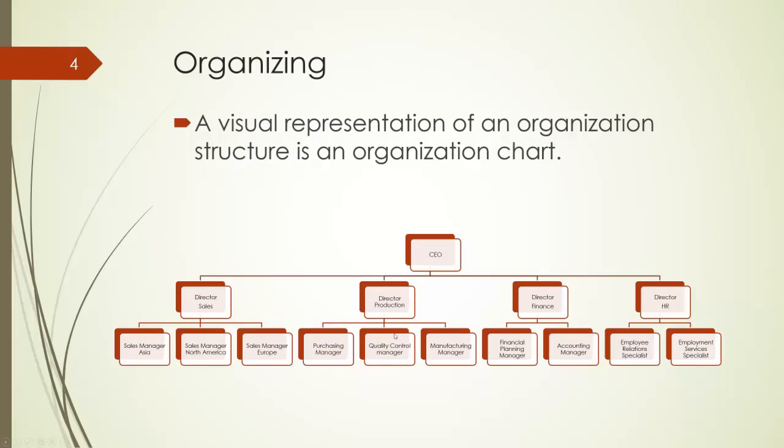A structure can be represented by an organization chart as a visual representation of an organization structure, as shown here. It is an example of a simple chart of a typical manufacturing company with the CEO as the top manager. There are four functional departments such as production function and sales function, where the functional managers work under the CEO.